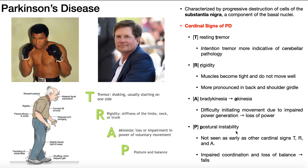And then we have the P, which is postural instability. This is not seen as early as the other three cardinal signs — resting tremor, rigidity, and bradykinesia going to akinesia. It involves impaired coordination of movements, which can cause loss of balance and falls. Notably, the most common direction of falls is backwards — posterior. They won't fall as much walking forward or sidestepping, but when walking posteriorly or even just standing still, the falls usually occur backwards, though not always.